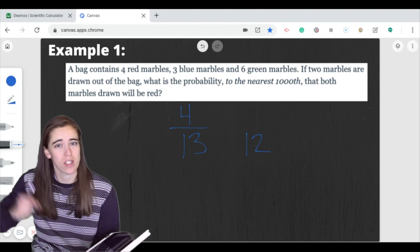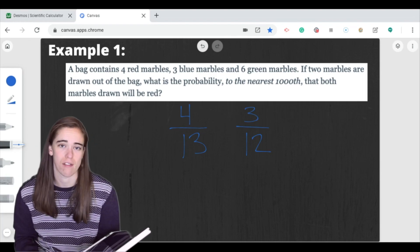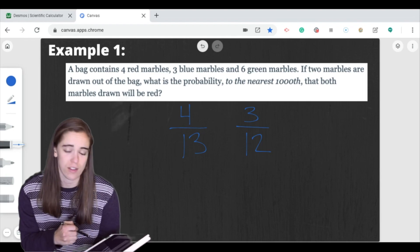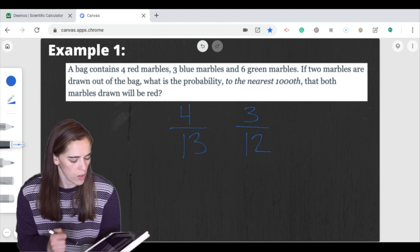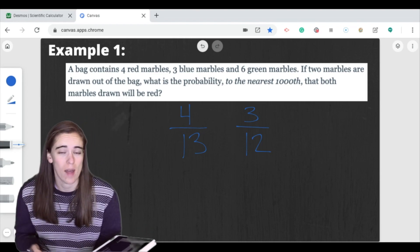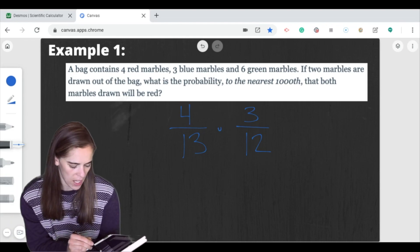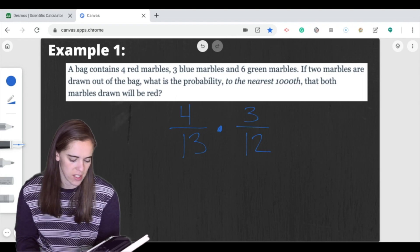And one of the marbles that I drew was already red. So that means that there are only three of them left. So right here, this means that I'm going to have four out of 13 for the first draw, three out of 12 for the second draw. And I want to know the probability that that happens twice. So that means I draw one red and another red. And when we say that word 'and', that means that we're going to be multiplying. So we're going to have to multiply these together.